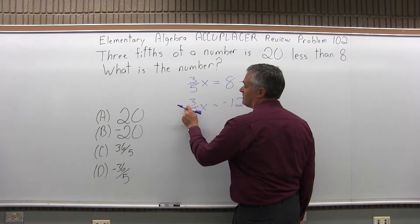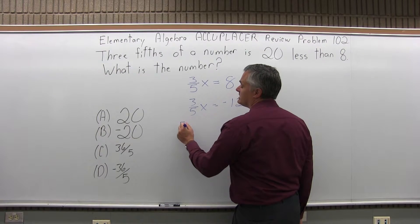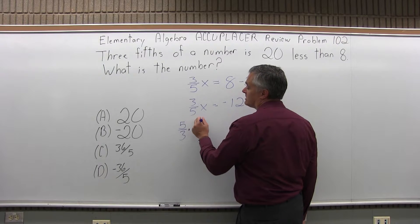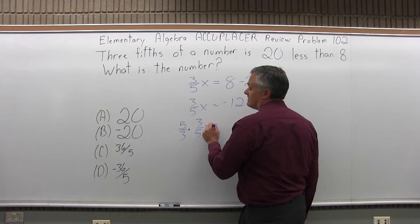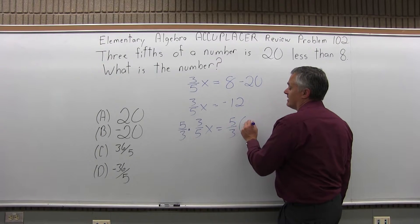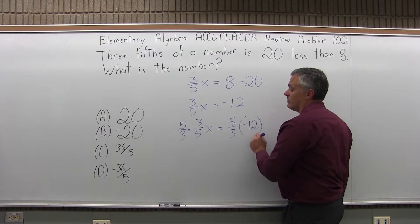So on the left I'm going to multiply times the reciprocal of this, the opposite fraction, so five-thirds times three-fifths x. I can do that as long as I do it on the right side, five-thirds times negative 12. Don't lose the negative, that's important.